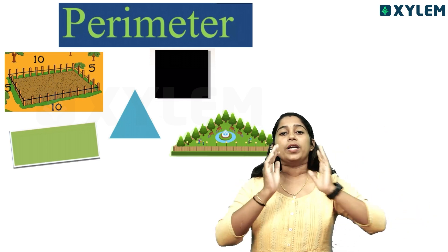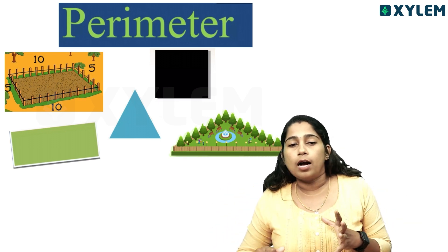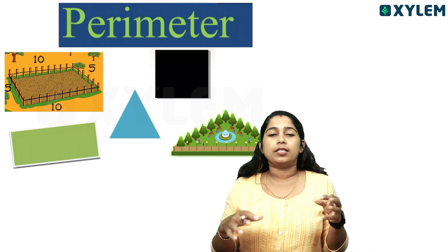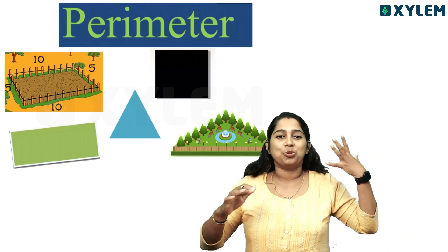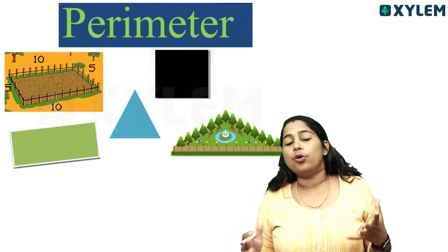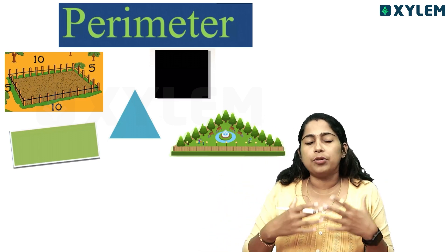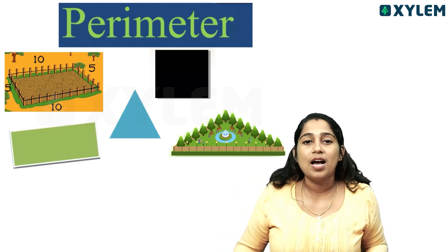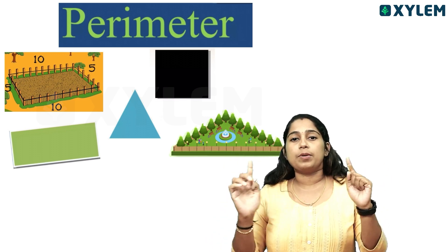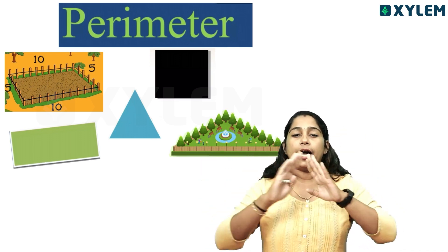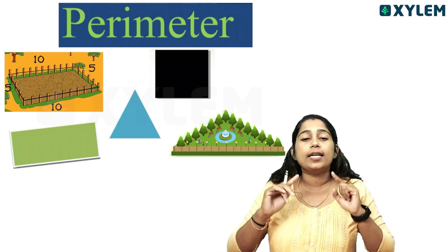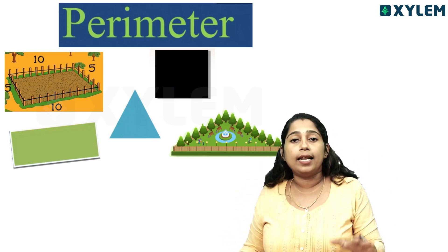In our house, you will have a garden. In the evening, if you are in the garden, you will have to protect the garden. You will need to put up a fence. This total length of the fence — what is that total length? That is the perimeter.